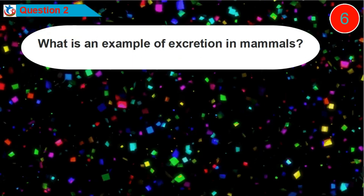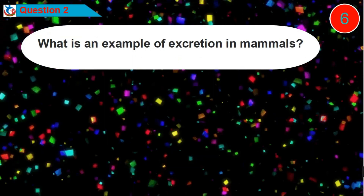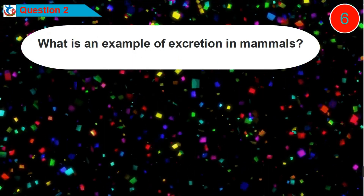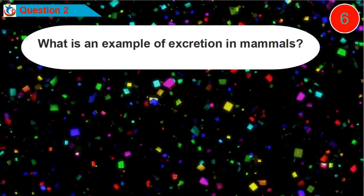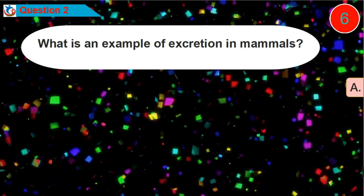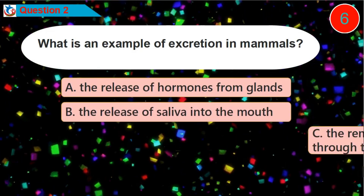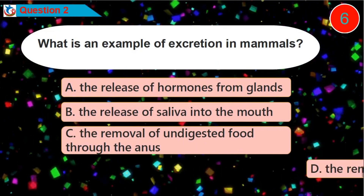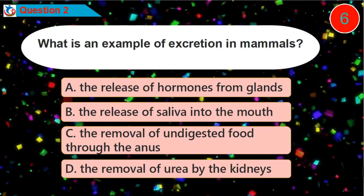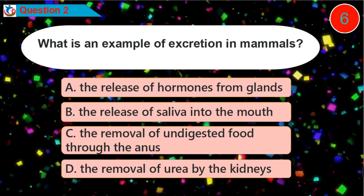Question 2. What is an example of excretion in mammals? Is it option A, B, C, or D?